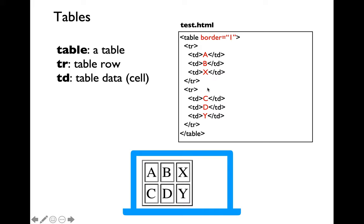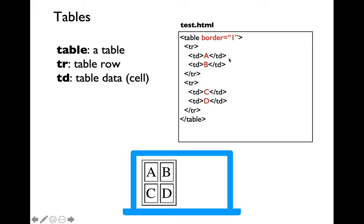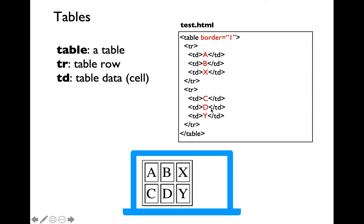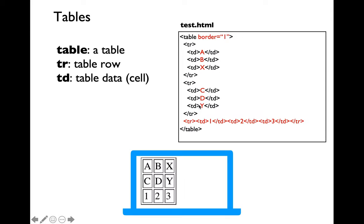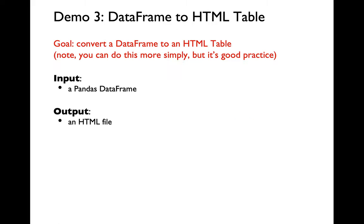To add a column to your table you need to add a TD tag for each row. To add a row you need to add a whole new TR tag. I'm not going to cover the table demo — I'll leave you to figure out how to write the code for this particular demo.